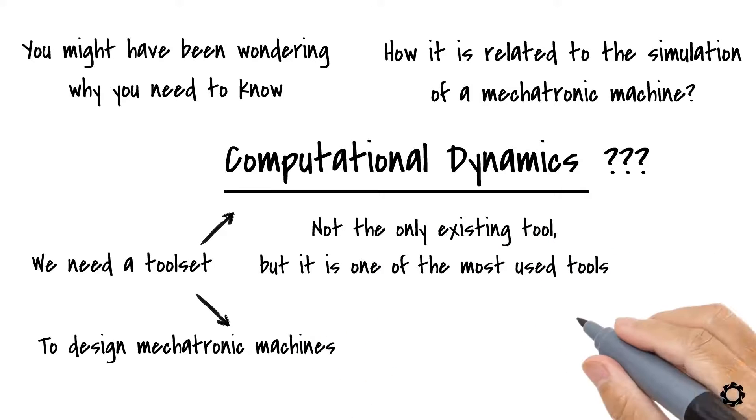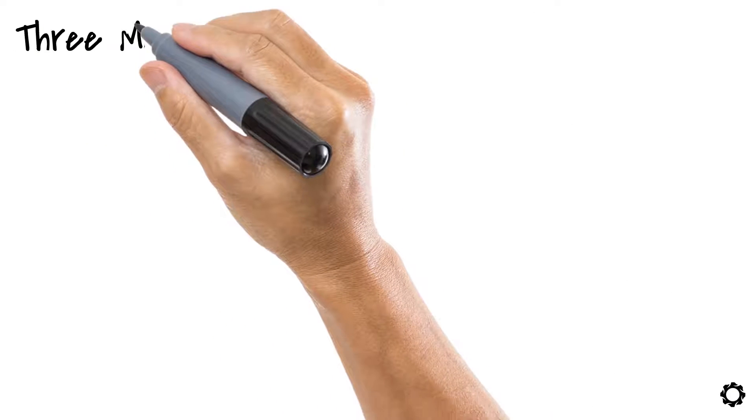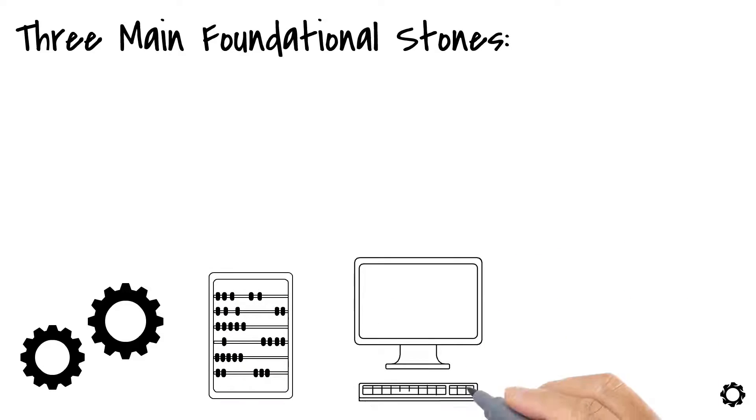Computational dynamics is a discipline that uses computational methods to study the mechanical phenomena in a machine. In computational dynamics, you can find three main foundational stones: mechanics, of course, mathematics, and computer science.